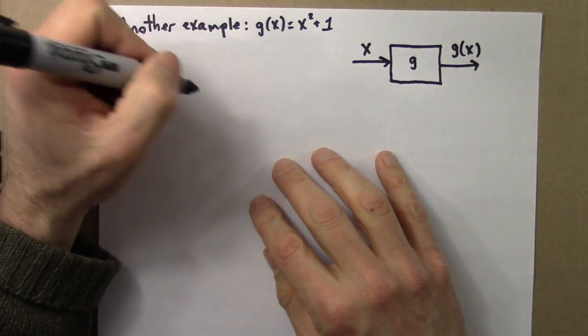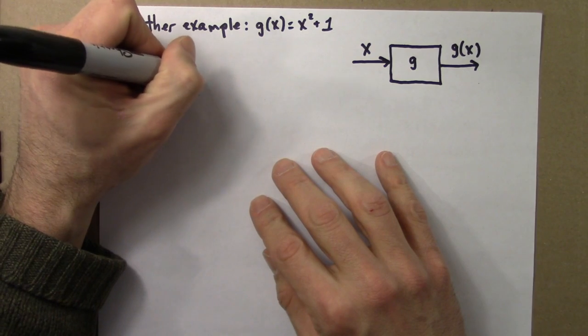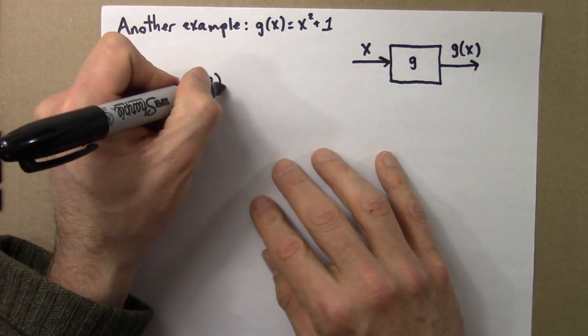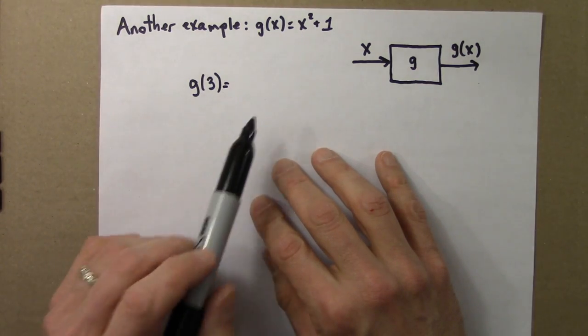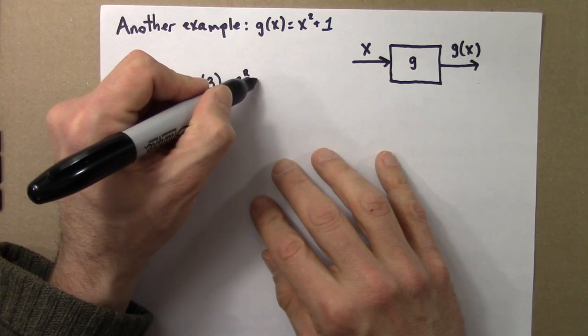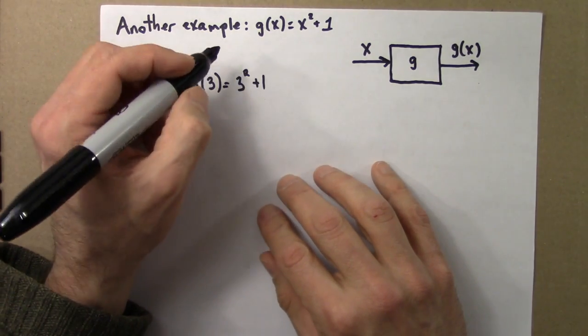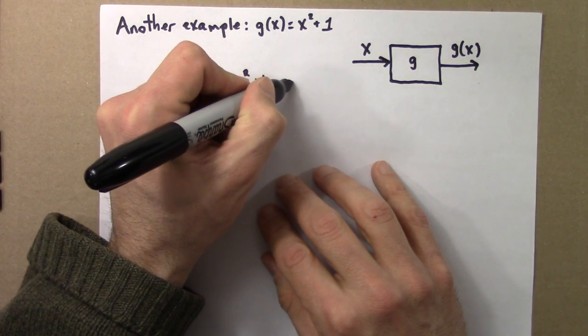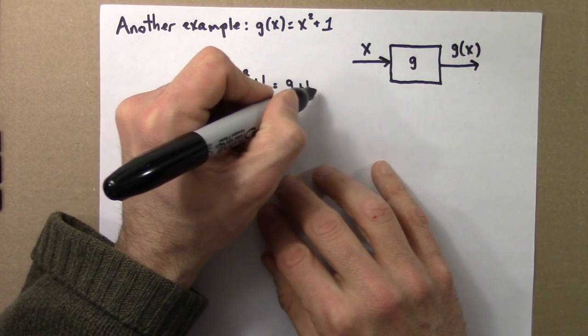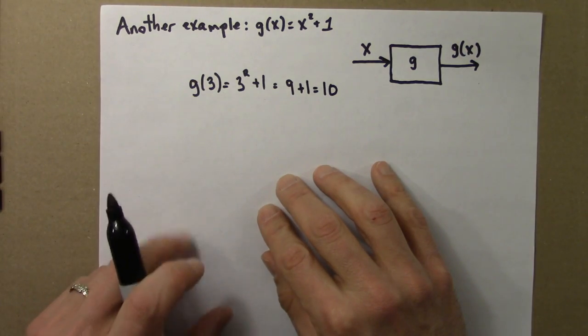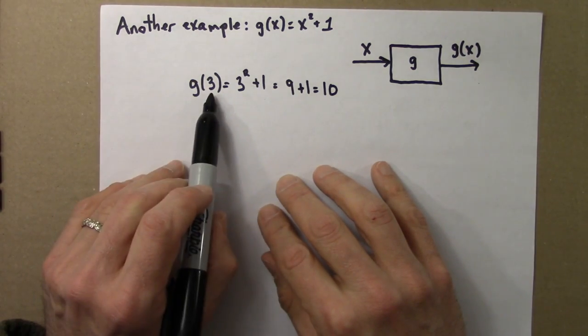So let's evaluate this function for a few different values. So, let's say our input is 3. So that would mean g of 3. So what do I do? I take 3 and I square it, that's the rule. 3 squared plus 1. Well, 3 squared, that's 9. 9 plus 1 is 10.